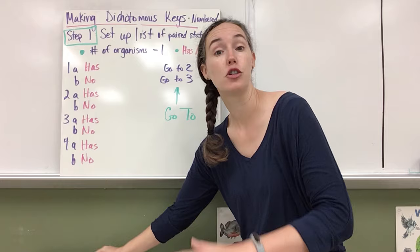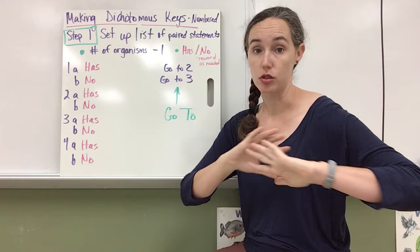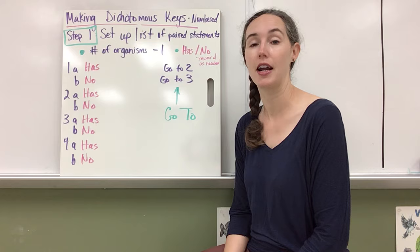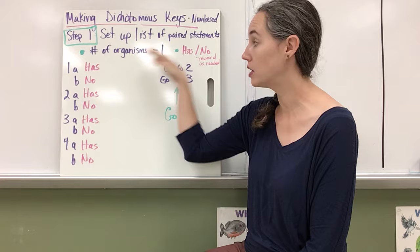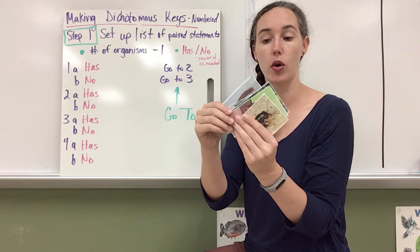The first step is just setup. If you can get it set up to begin with, it makes everything so much easier and you're highly likely to make an excellent key that will help anybody identify an unknown organism. So there are a few steps. First, you need to figure out how many organisms you have and subtract one, and that will give you how many paired statements you need.